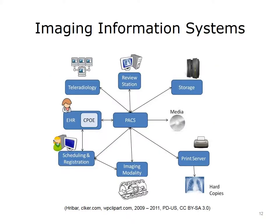One of the smaller pieces of an entire hospital information system is the imaging information system. At the center of the imaging information system diagram is the Picture Archiving and Communication System, or PACS. When an image is needed, the Computerized Physician Order Entry System, or CPOE, within an EHR, places an order for the image to the scheduling and registration systems. These systems also interact with the imaging modality system and the PACS for coordination of the appointment information. Then, the PACS takes input images from different imaging modalities, stores them, and communicates them to different entities.